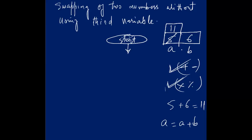This B will be equal to A minus B. What is A? A is 11 now, minus B — 11 minus 6 — that is equal to 5.